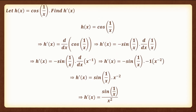The next question is: let h of x is equal to cos of 1 by x, find h prime of x. h prime of x is equal to d by dx of cos of 1 by x, which implies h prime of x is equal to minus sin of 1 by x into d by dx of 1 by x. Here d by dx of x to the power minus 1 is differentiated by the rule nx to the power n minus 1. This implies h prime of x is equal to minus sin of 1 by x into minus 1 times x to the power minus 2, which gives h prime of x is equal to sin of 1 by x divided by x squared.